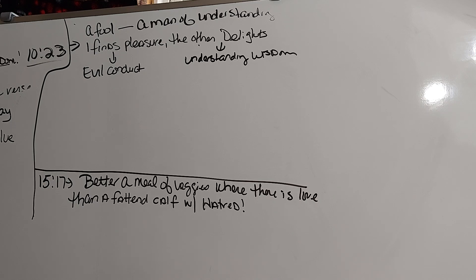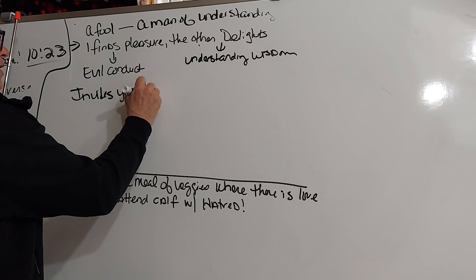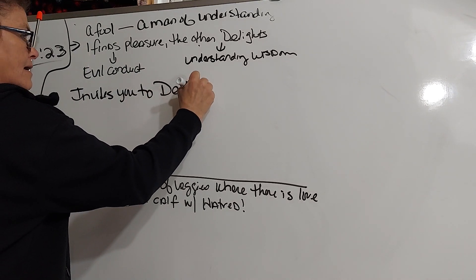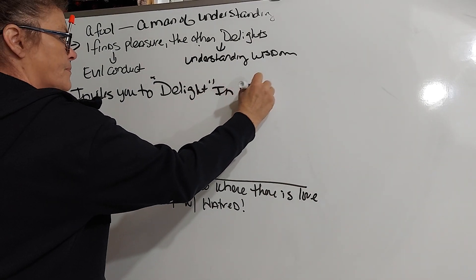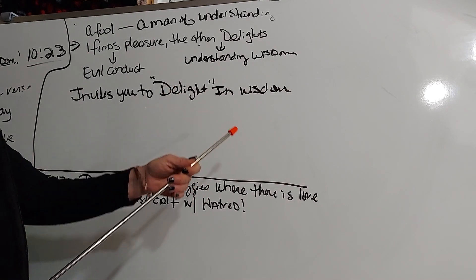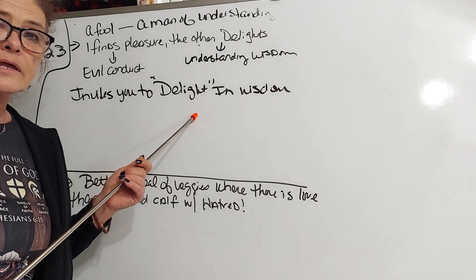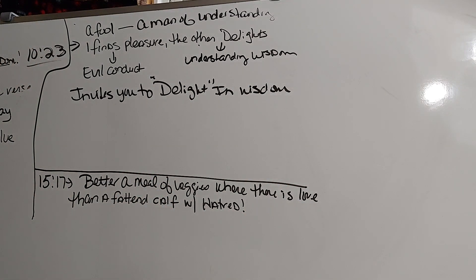The final contrast in these two is the key to the whole verse. Look at your verse, 10:23. A fool finds pleasure in evil conduct, but a man of understanding delights in wisdom. The final contrast is the key to the verse. Like the rest of the Proverbs, the book invites you to delight in wisdom. And Jesus said, if you seek, you will find. And delight doing so.